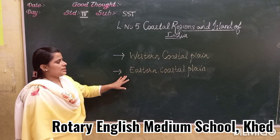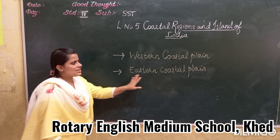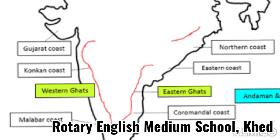The eastern coastal plain has two broad divisions. In the northern part, it is called the Northern Circar. And in the southern part, it is called the Coromandel Coast.